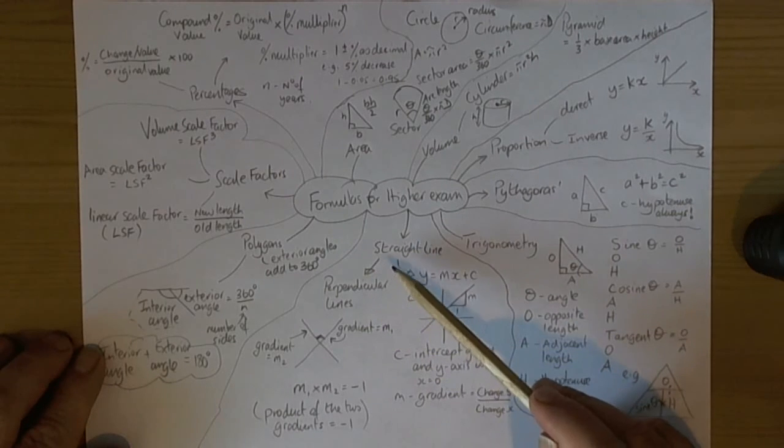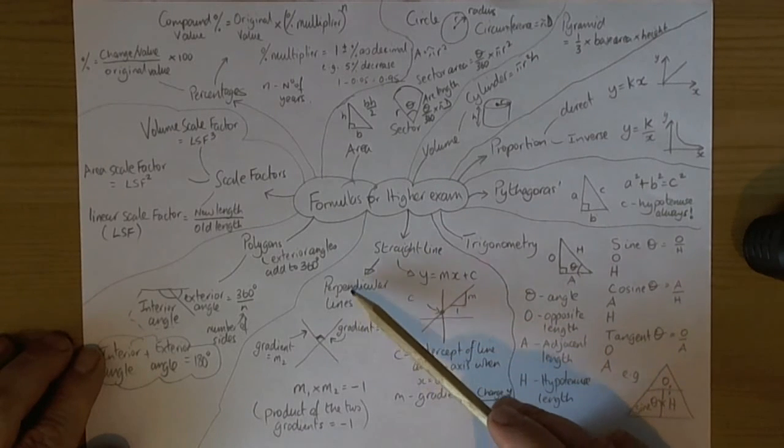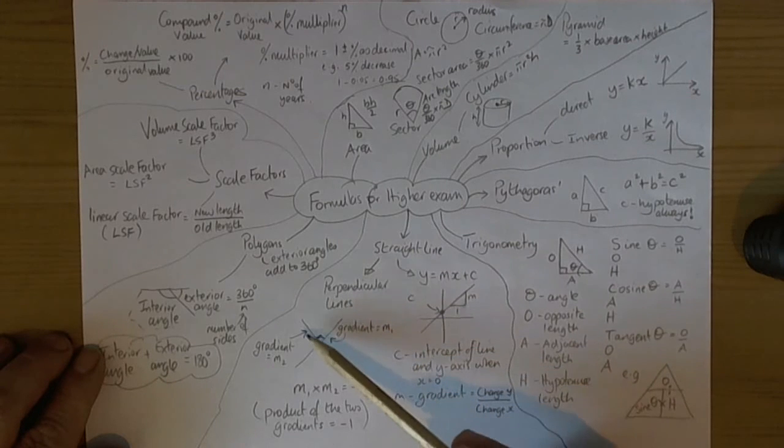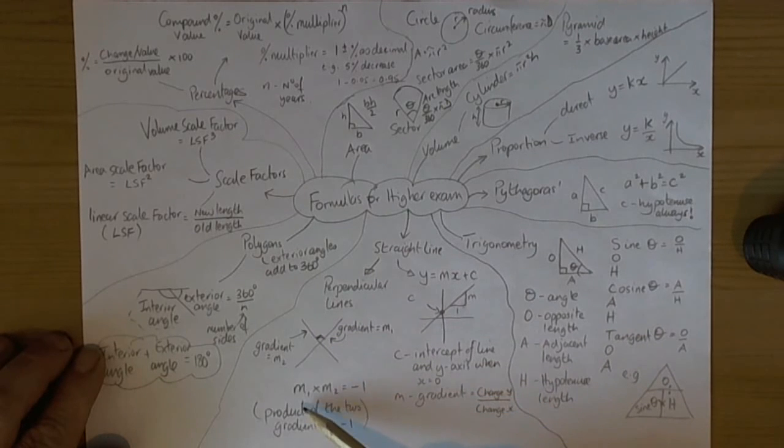The straight line also goes into higher level work with perpendicular lines and we've just got to remember a simple rule that if we've got perpendicular lines, those that meet at right angles or cross at right angles, then the two gradients multiplied together must give you an answer of minus one, negative one.